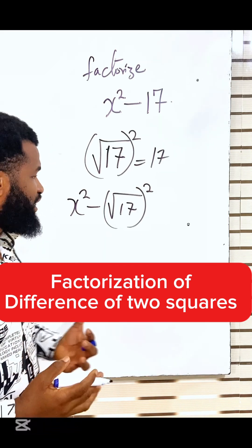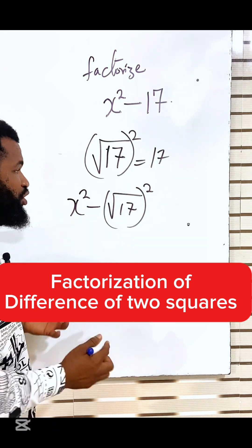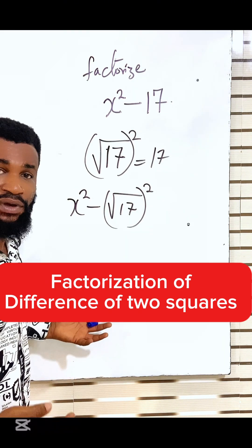So I now have what is called difference of two squares. For me to have this difference of two squares, I am going to apply the principle of factorizing difference of two squares.